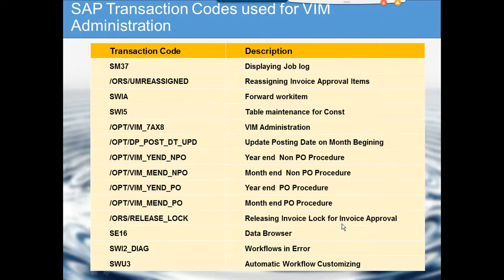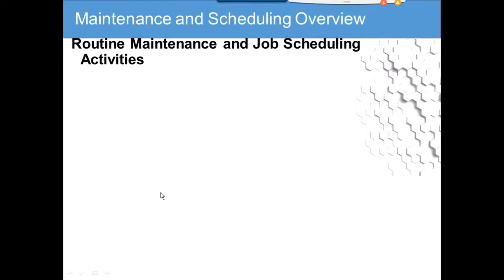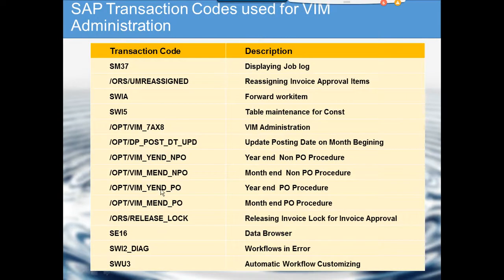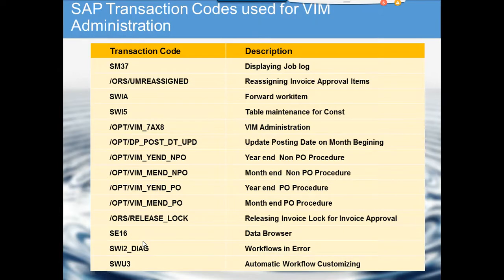The same process applies for PO invoices and month-end PO procedures. The next transaction code is for releasing the invoice log for invoice approval. This goes along with the /ORS_UM reassign transaction. Sometimes an approver sits on a work item and forgets to act on it, so you may need to release the lock using this transaction code.